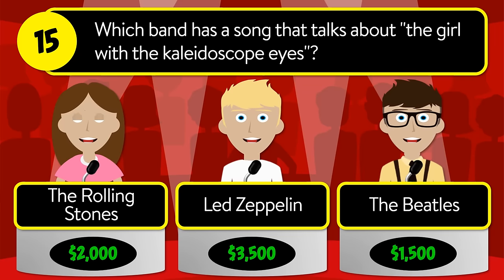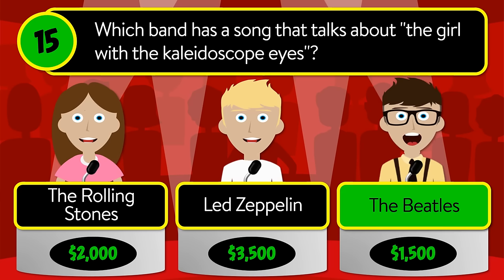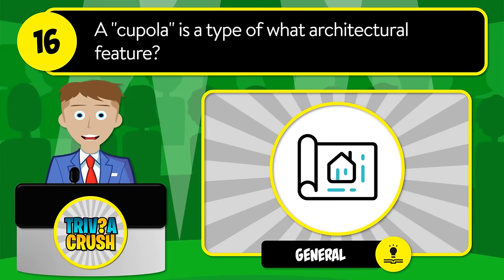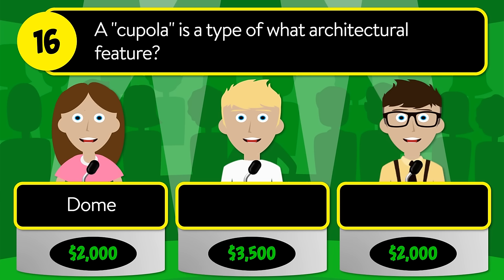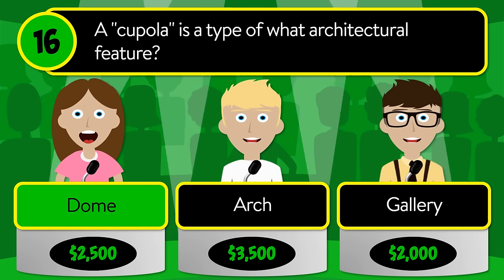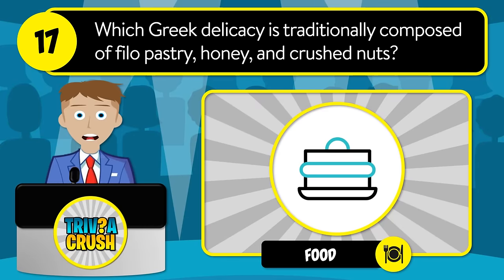Zeppelin, or the Beatles? The correct answer is the Beatles. Question number sixteen: a cupola is a type of what architectural feature? Is it dome, arch, or gallery? The correct answer is dome.